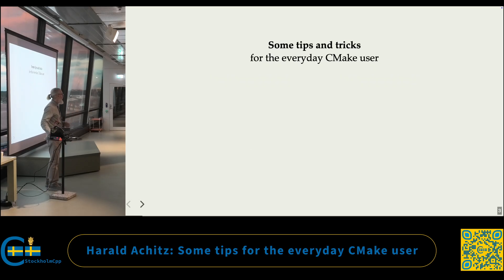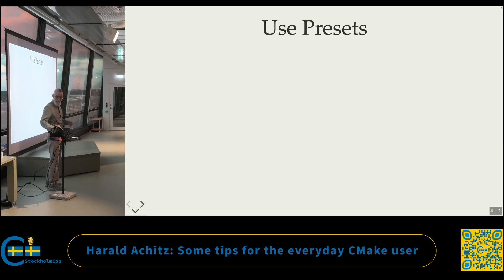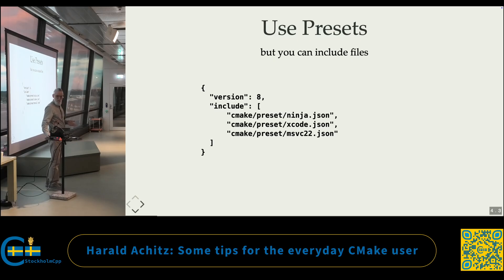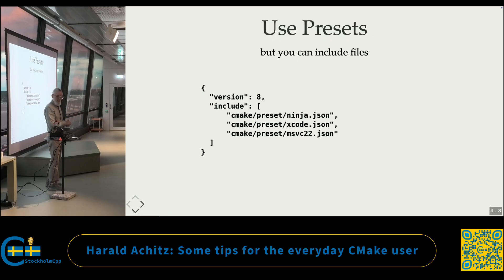Some tips for the everyday CMake user. Use presets is the very first thing. Yeah, they are verbose and they are JSON. Some people like to use that as an excuse to not use them, but you shouldn't, because you can include files and then the big pile of text can become less. This is what my top-level preset file looks like usually, which I copy when I start a new project. I have my Ninja presets, the Xcode, and the MSVC one, and that gives me build support for all platforms — except for embedded where we need toolchains, but this can easily be added.